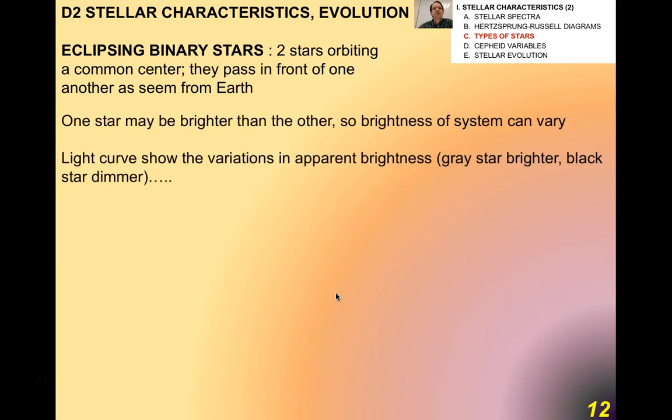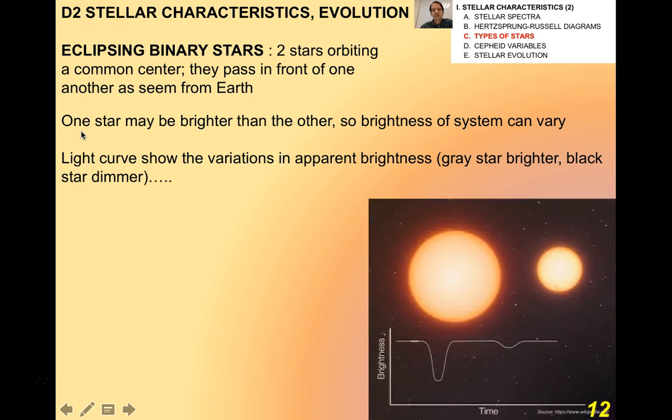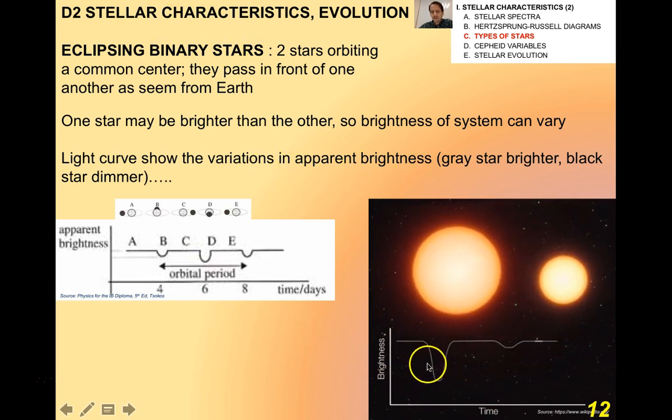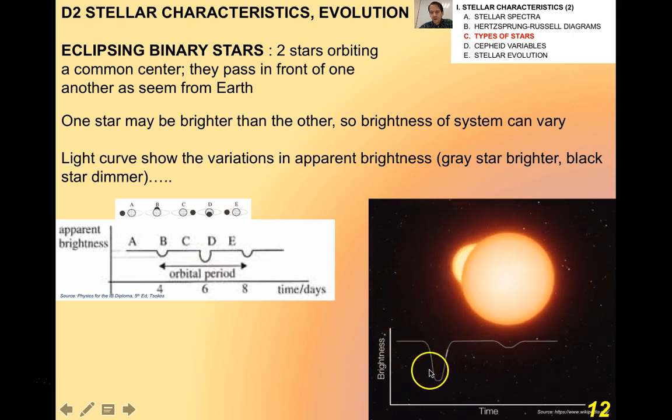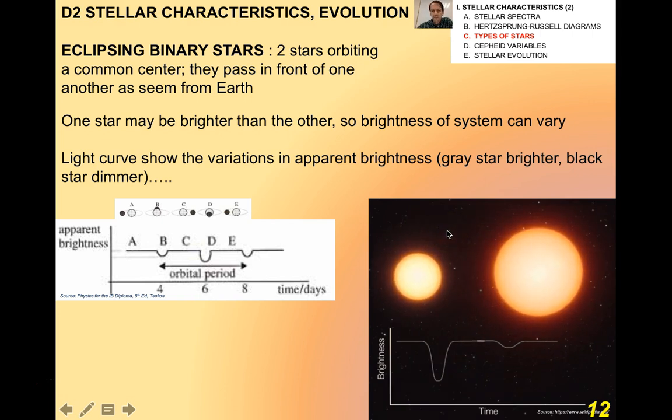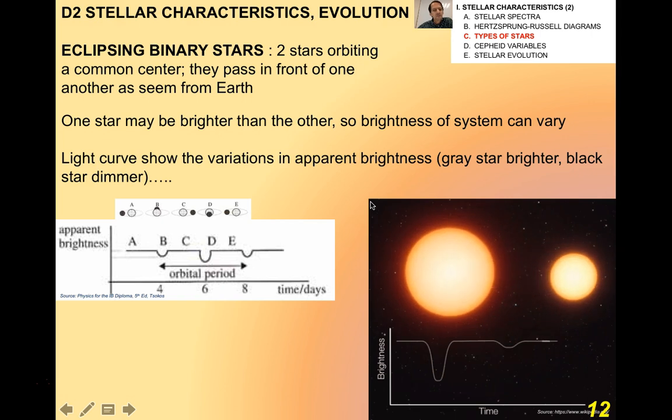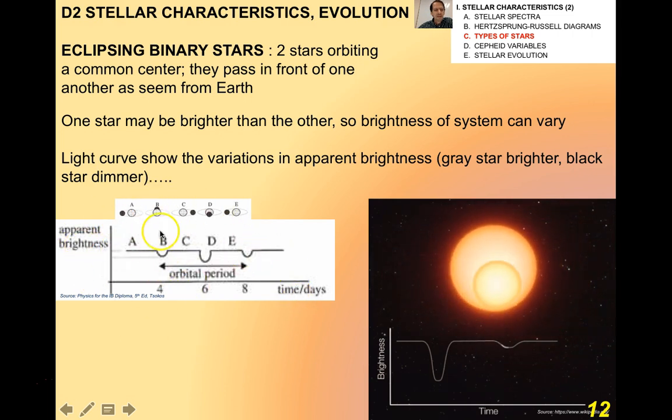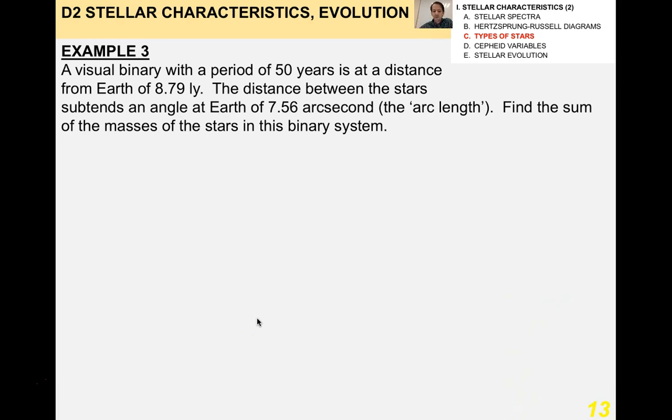Eclipsing binary stars. These are super cool. You have two stars orbiting a common center. They pass in front of one another. One star might be brighter than the other, so the brightness of the overall system can vary, and it makes a regular periodic pattern in luminosity, or apparent brightness. The light curves show the variations in apparent brightness. So, the gray star is brighter in this case, and the black star is dimmer. If you look at this diagram here, when you see both stars, you get the greatest brightness. When the big one, which is dimmer, passes in front of the smaller one, which is brighter, you get a bigger dip in the brightness against time than you do when the reverse happens. If you look at this little gif and really think about what I'm talking about, you're going to get it. We can talk about this a little more in class. You need to be able to interpret what's going on from an apparent brightness against time graph in the IB like this.